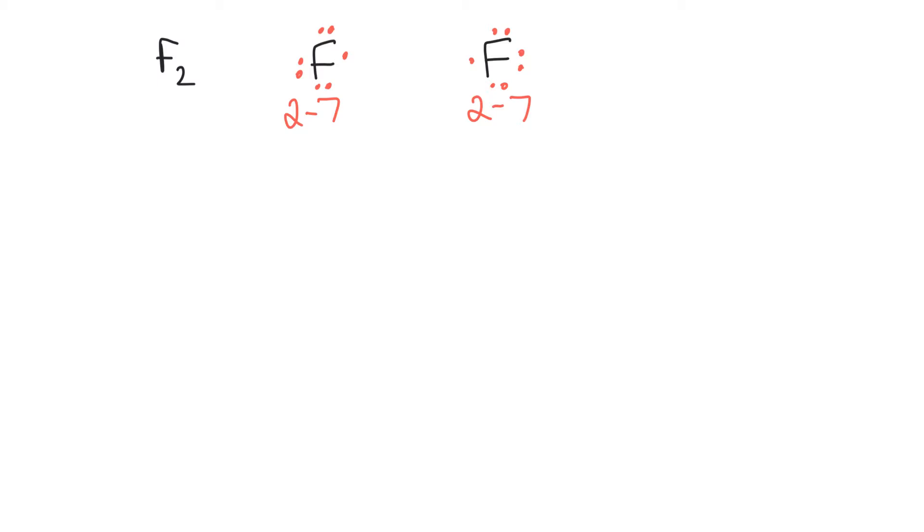The element just past fluorine on the periodic table is neon. Neon has an electron configuration of 2,8. It's got those eight electrons filled around it, so that outer shell is completely full. We might guess that fluorine wants to be like neon. If it can somehow find a way to steal one more electron, then it'll be completely full on its outer shell, and that's going to make it quite stable.